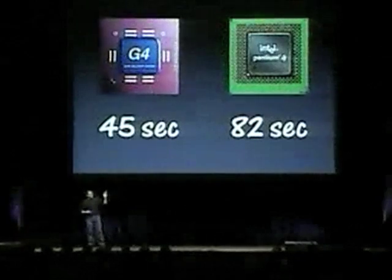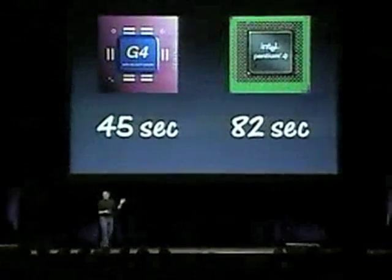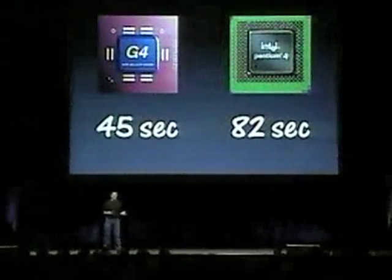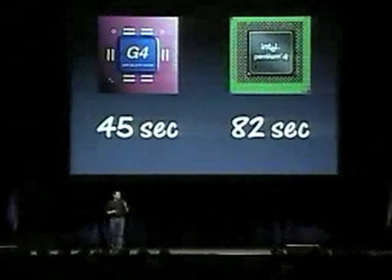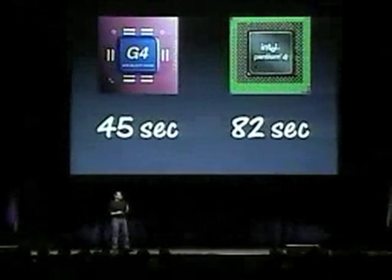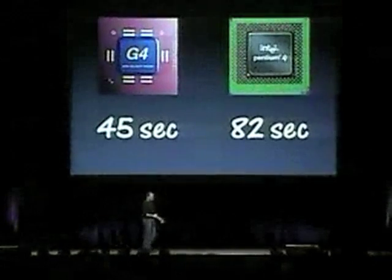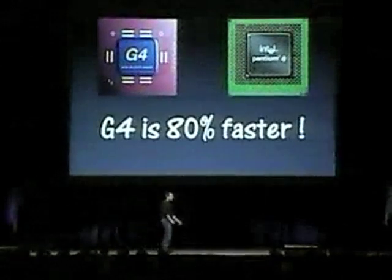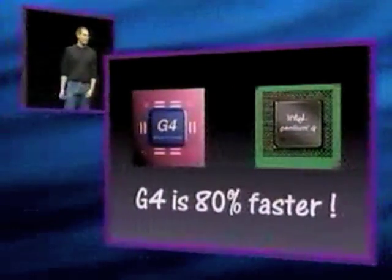In the showdown, the G4 completed the task in 45 seconds. The Pentium 4 took 82 seconds for the same exact task. That means the G4 at this task is 80% faster than a 1.7 gigahertz Pentium.